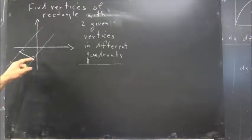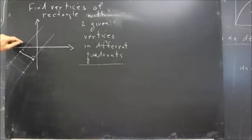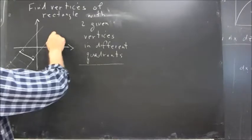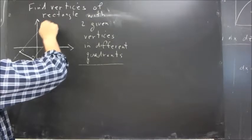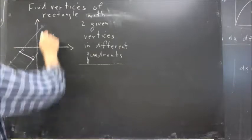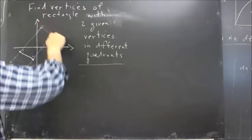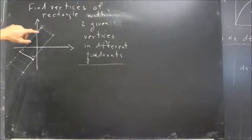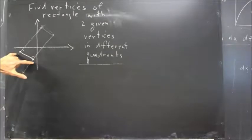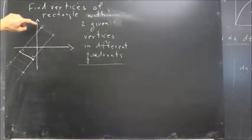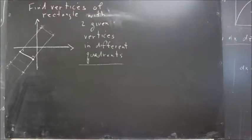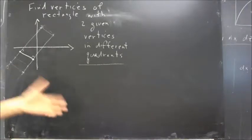If you go in the other direction, one line passes through the fourth and first quadrants, and the other passes through the second and first quadrants. If we pick our points out here, our two vertices would be in a different quadrant from the given vertices. However, they'd be in the same quadrant as one another. Can you see where we would be able to pick two points in different quadrants than these two and different quadrants from one another? You should pause and think about that.